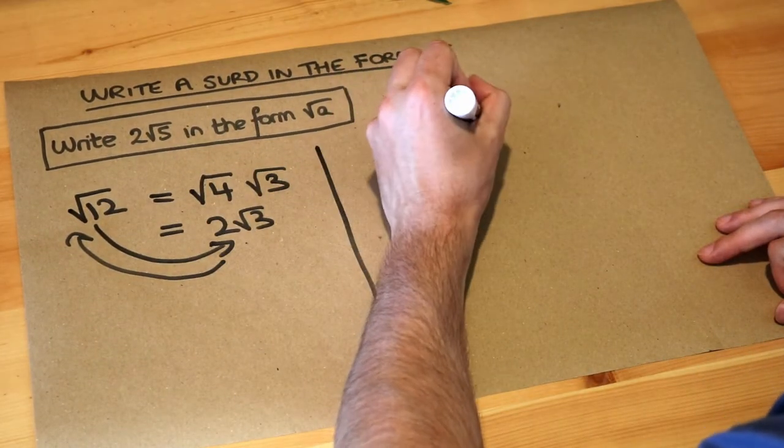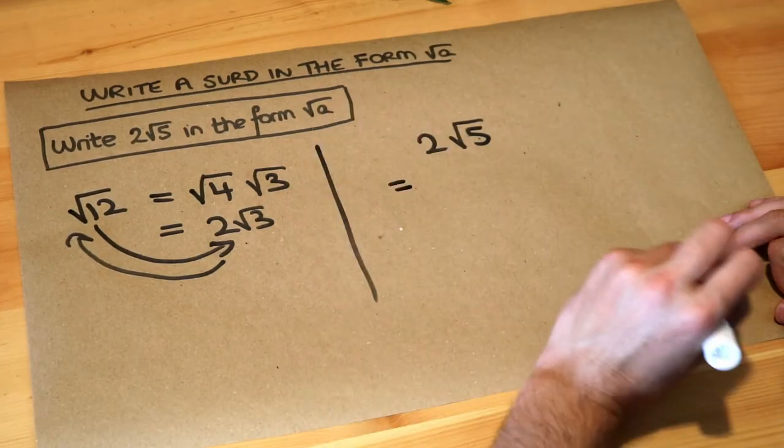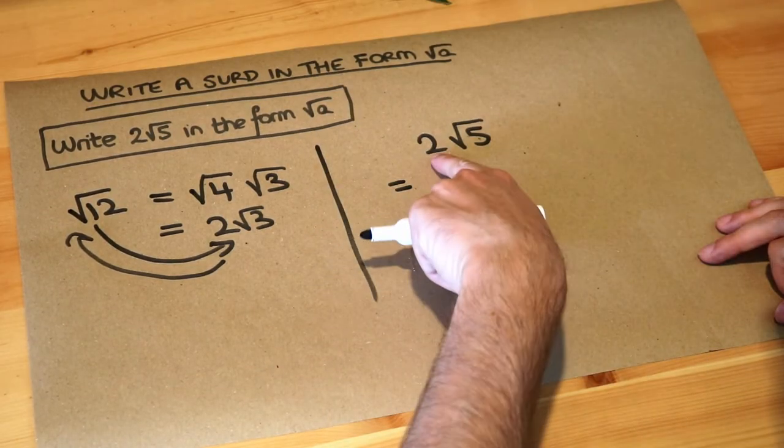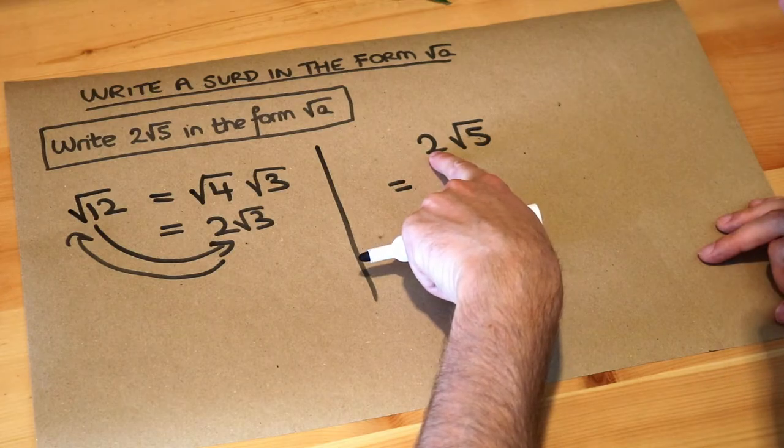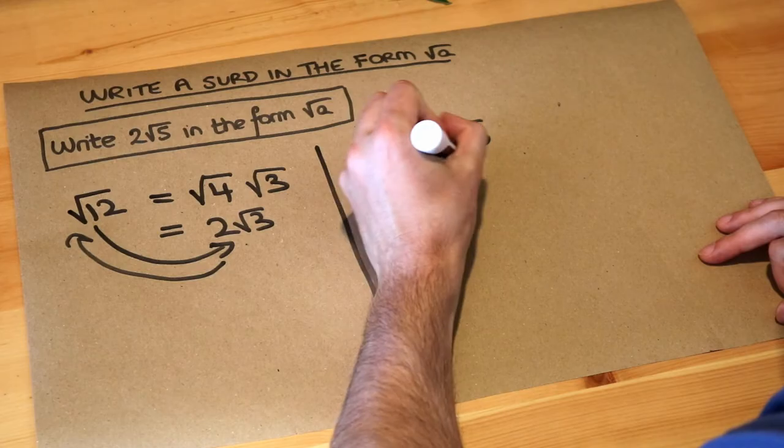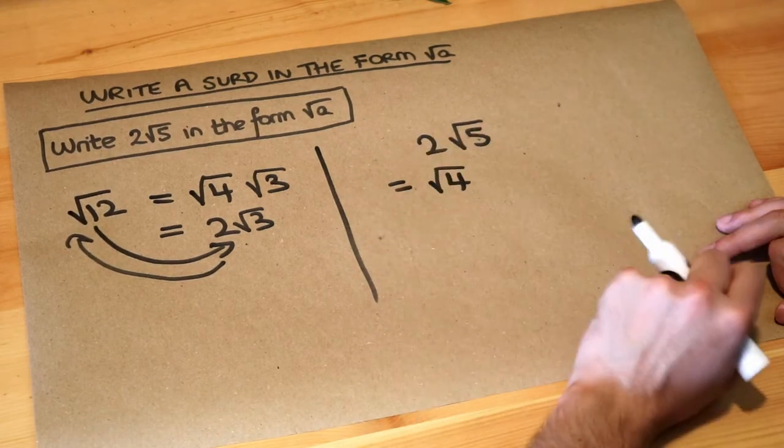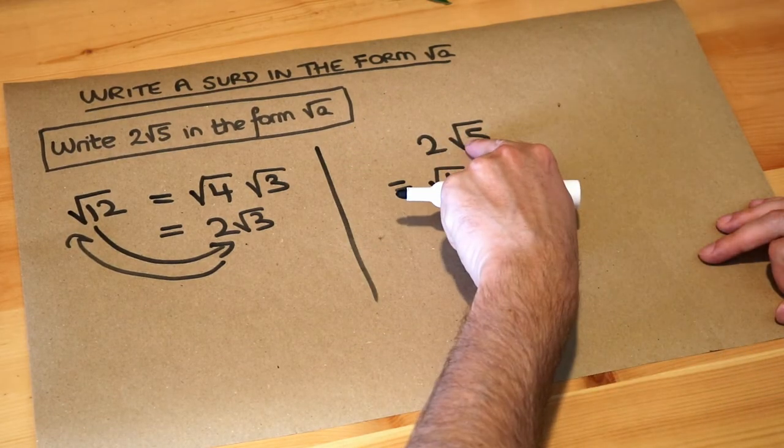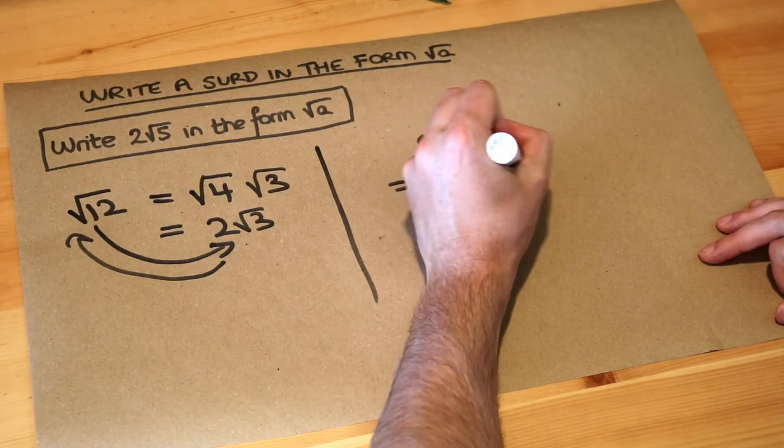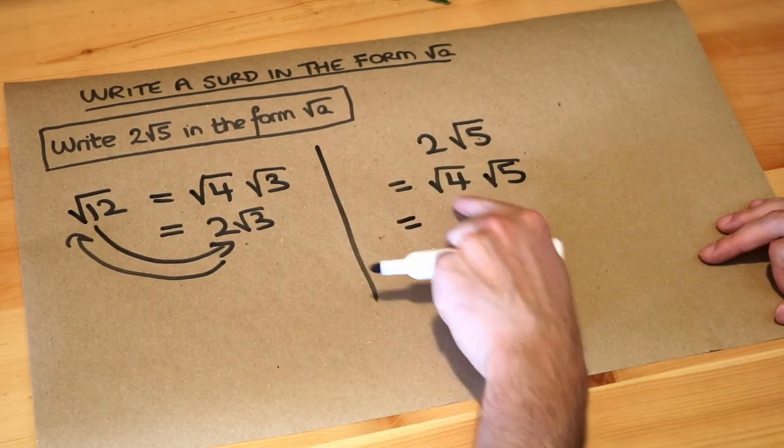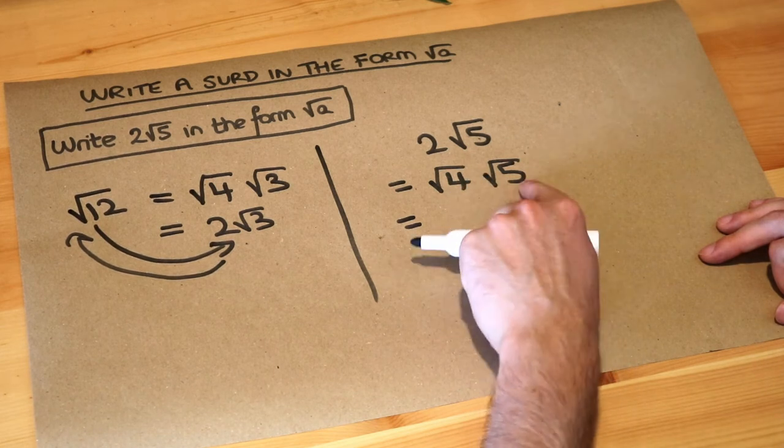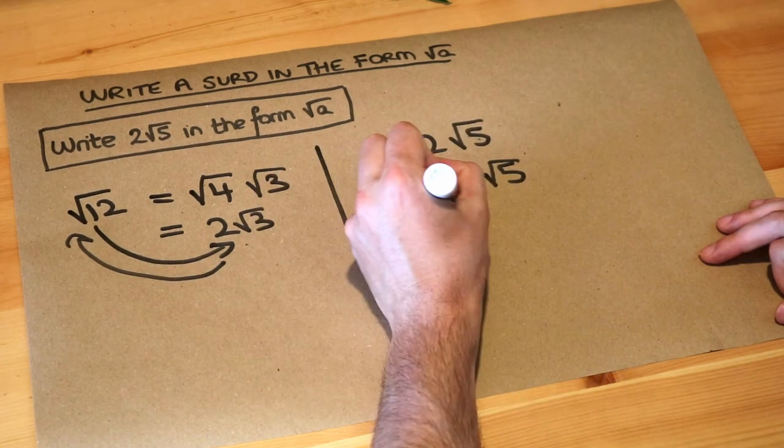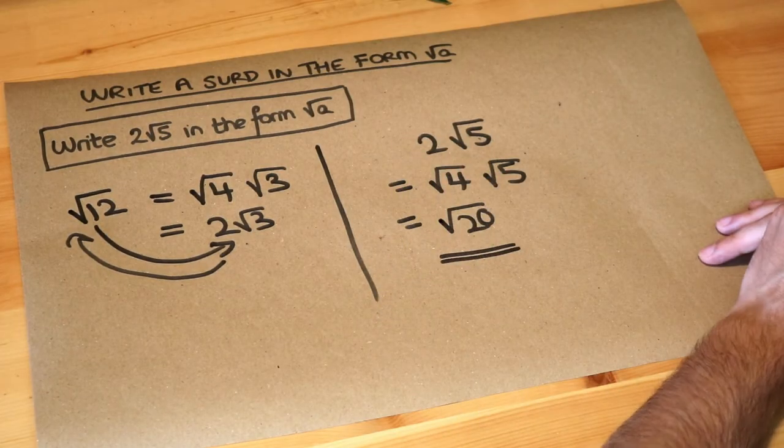So we've got 2 root 5. What we do is we write that 2 as a surd. So the square root of what is 2? Well, it's the square root of 4. The square root of 4 would have given you 2, and we're multiplying it by the square root of 5. And because we now have a surd times a surd, we can just multiply those numbers together. 4 times 5 is 20, so it's root 20, and that is the final answer.